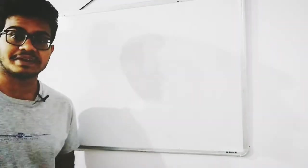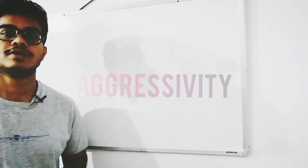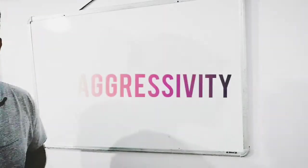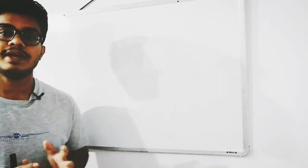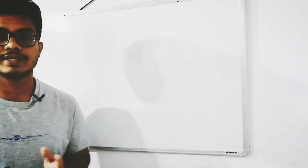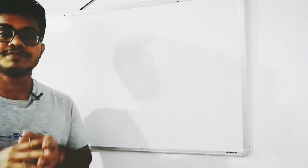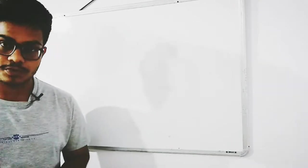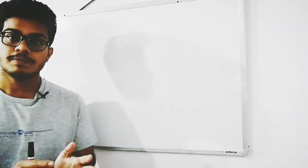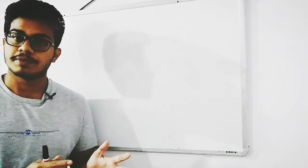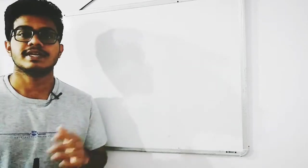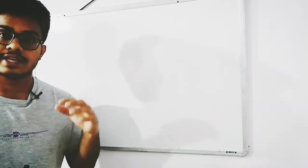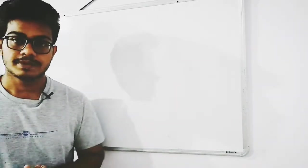Hello guys, welcome to my channel Agriculture. In this video you'll be learning about one more — or the last — relative function of intercropping systems, that is aggressivity. Aggressivity is the relationship between the main crop and the component crop, or the two or three crops grown in the intercropping system. It is mainly calculated to find out the competition between the two crops — whether they are equally competitive, more competitive, or less competitive with each other.